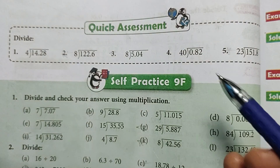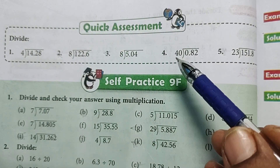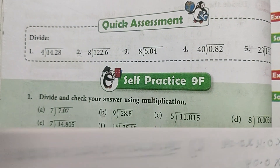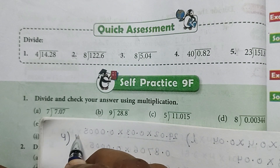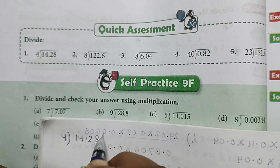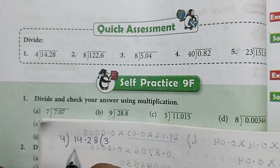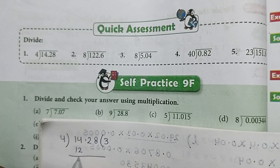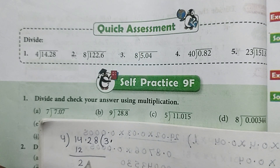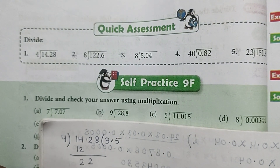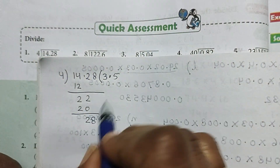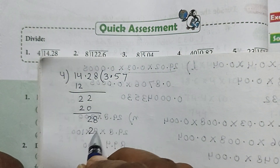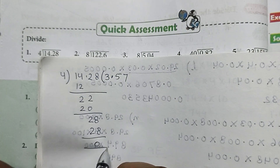Now quick assessment on page number 126. First: divide 14.28 by 4. 4 threes are 12, 14 minus 12 is 2, bring down 2 - place decimal here. 4 fives are 20, bring down 8. 4 sevens are 28, remainder 0. Answer is 3.57.